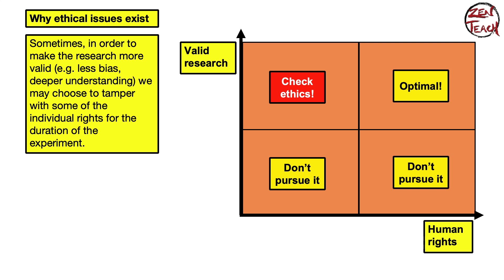Let's start with a graph. Suppose we plot the validity of research — the quality of the research — against human rights, meaning how much you were able to protect participants' rights. If you have low research quality and low validity, you don't want to do the research in the first place. So let's focus on the top quadrants: good research with high human rights, and good research where human rights are low.